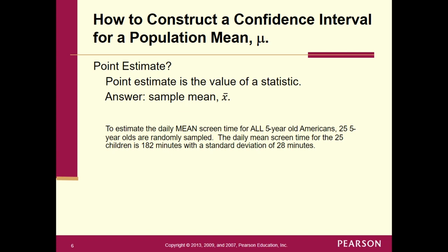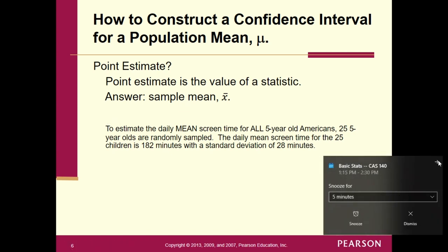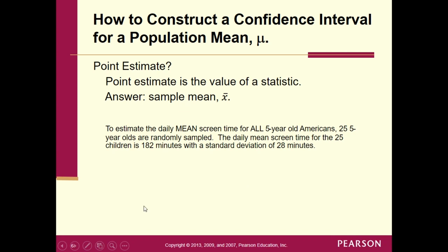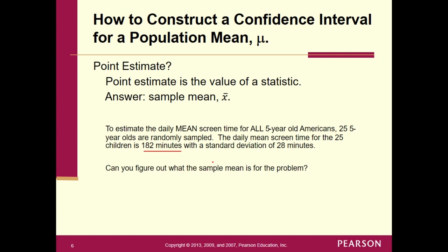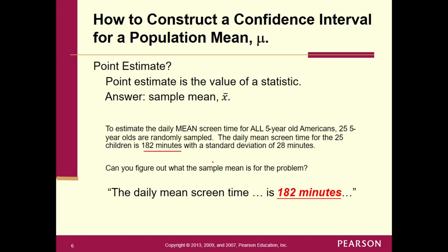Hopefully you paused the video and said: it says the daily mean screen time for the 25 children is 182 minutes with standard deviation 28. The screen time for 25 children on average is 182 minutes. For every problem you've got to figure out what x-bar is, and what the standard deviation is. Here, x-bar turns out to be 182 — so x-bar is equal to 182 minutes.